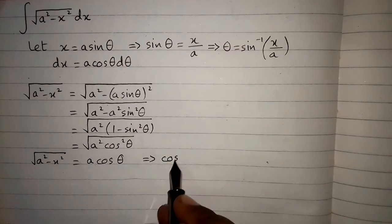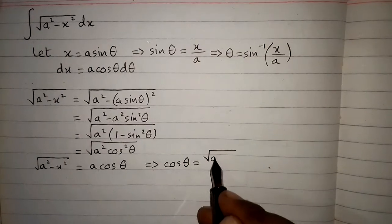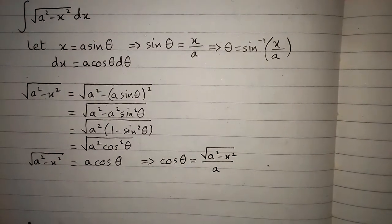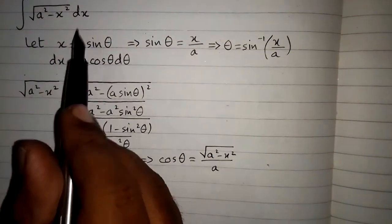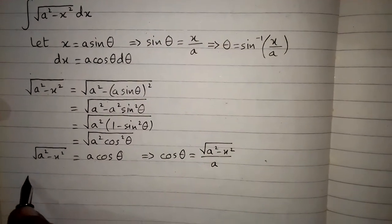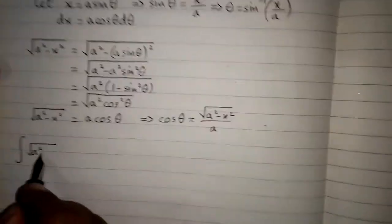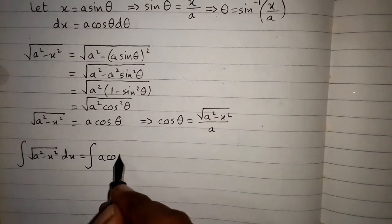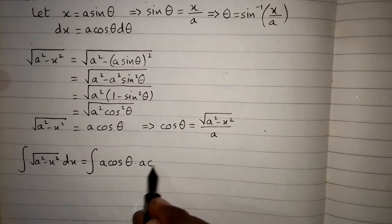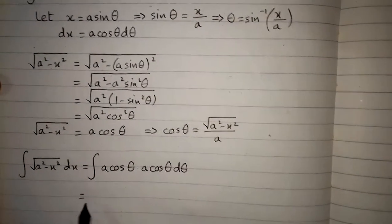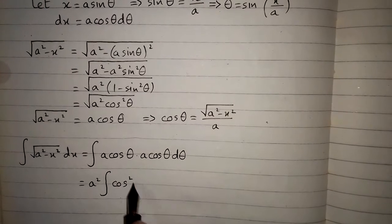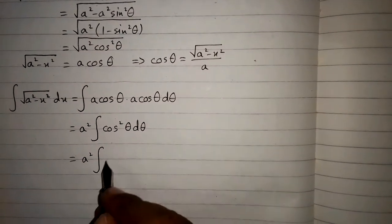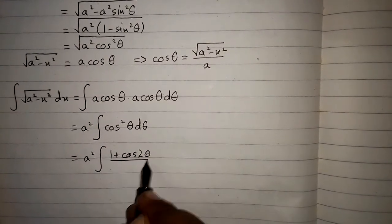So we have square root of a squared minus x squared equals a cosine theta, or equivalently cosine theta equals square root of a squared minus x squared upon a. Now we substitute into the integral: the integral of square root of a squared minus x squared dx becomes the integral of a cosine theta times a cosine theta d theta, which equals a squared times the integral of cosine squared theta d theta. Using the identity cosine squared theta equals one plus cosine 2 theta upon 2 d theta.